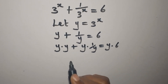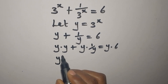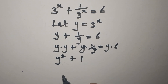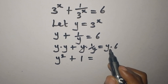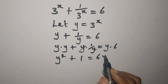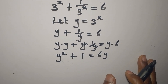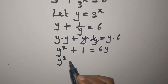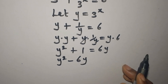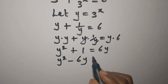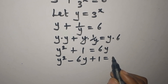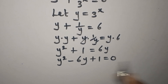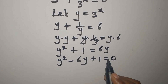Y times Y gives Y squared, then Y cancels with 1 over Y to give just 1, and that equals 6Y. Rearranging: Y squared minus 6Y plus 1 equals 0. We now have a quadratic equation because of the Y squared term.